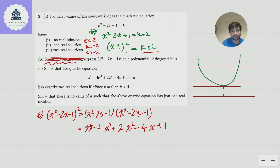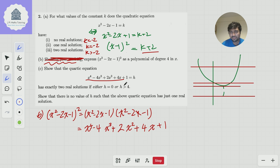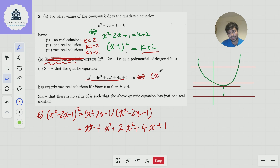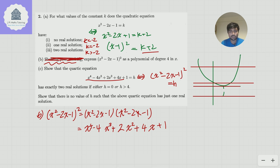Part C: show that the quartic x to the 4 minus 4x cubed plus 2x squared plus 4x plus 1 equals h has exactly two real solutions if either h is 0 or h is bigger than 4. If you stare at this, the left-hand side is exactly what we got in Part B. In MAT and STEP long questions, you're always going to be using previous parts. So this equation is completely equivalent to x squared minus 2x minus 1, all squared, equals h. Note that this is an 'if', not an 'if and only if', so we just need to check these two cases.